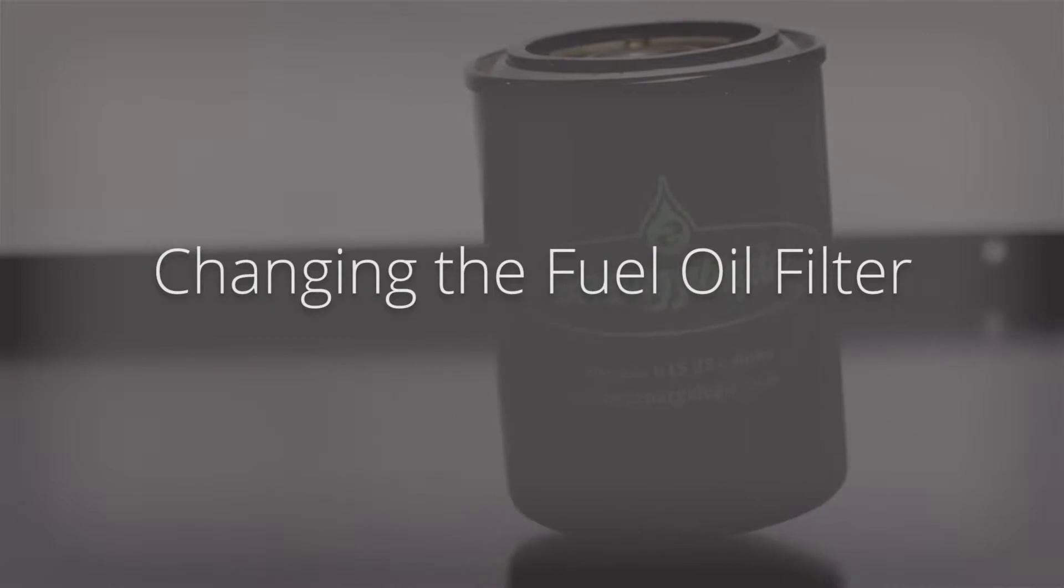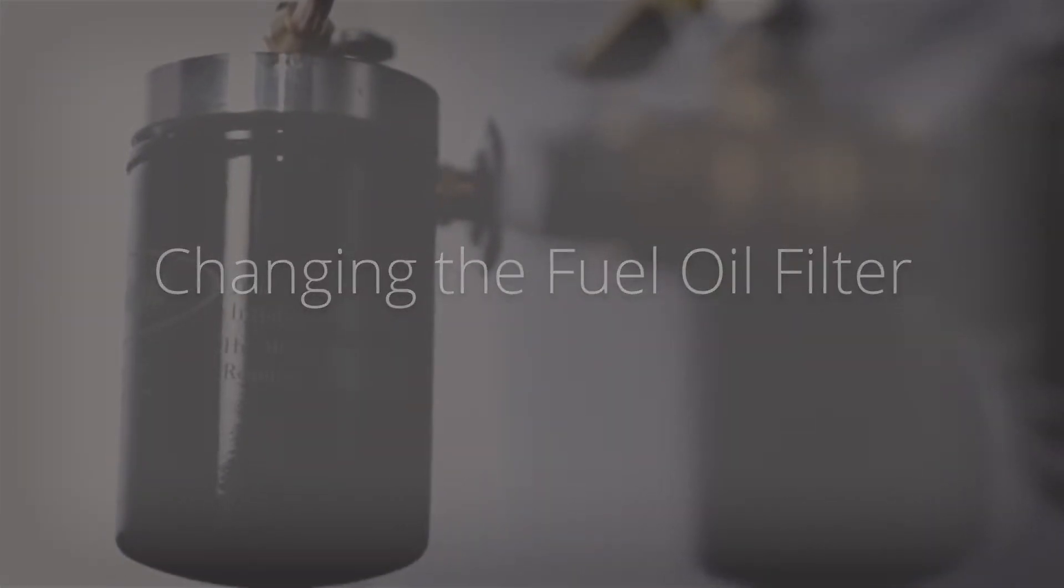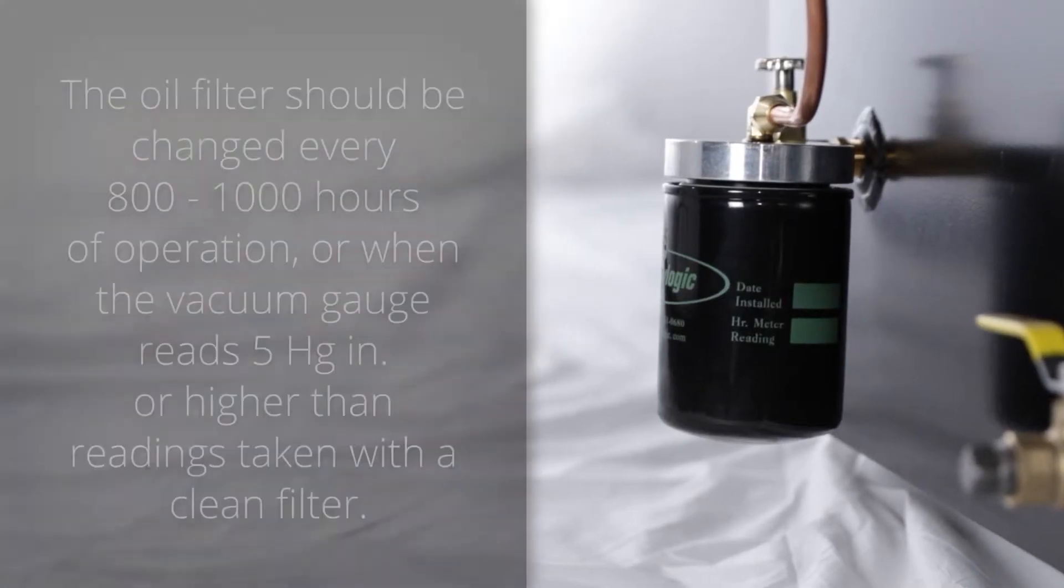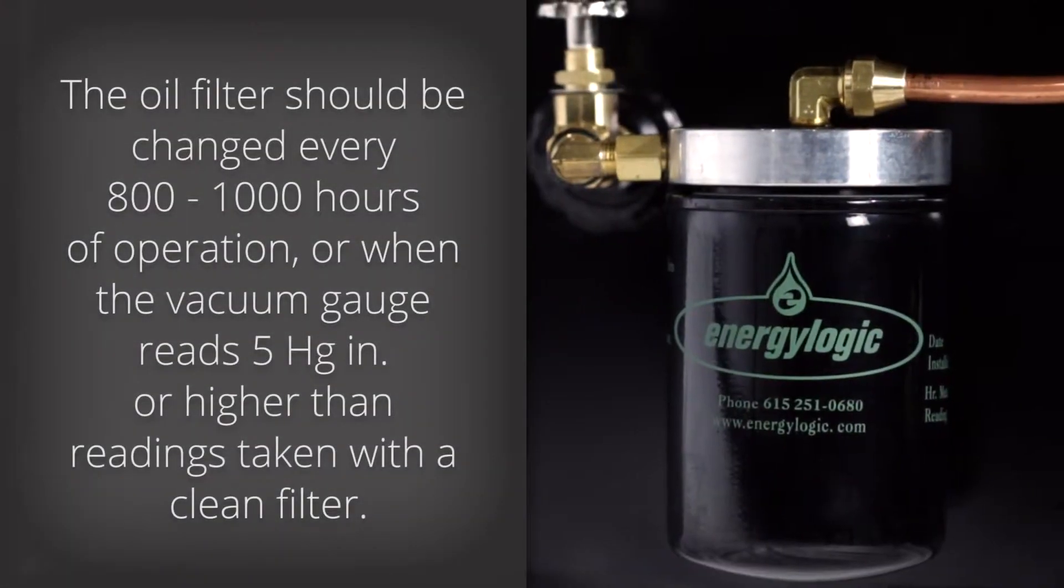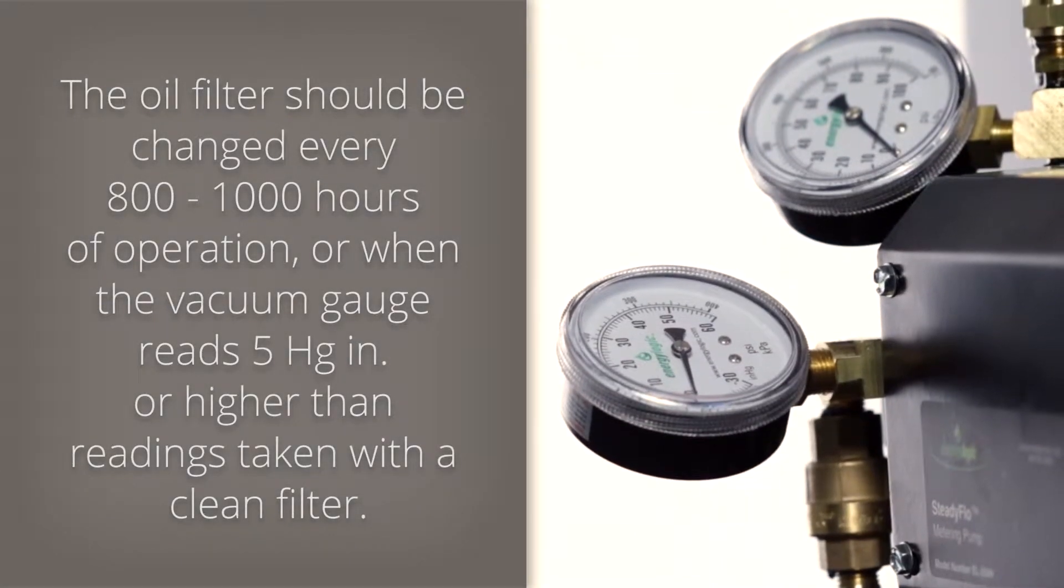This video will explain the process for replacing the fuel oil filter on your EnergyLogic waste oil furnace system. The oil filter should be changed after every 800 to 1,000 hours of operation or when the vacuum gauge reads five inches of mercury higher than readings taken with a clean filter.